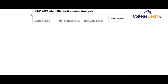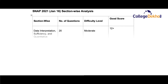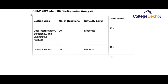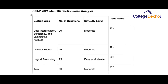The Data Interpretation and Quantitative Aptitude section had a total of 20 questions and the difficulty level was moderate. General English had a total of 15 questions, which were the least out of all sections, and the difficulty level was again moderate. Logical Reasoning had an easy to moderate difficulty level and there were a total of 25 questions in this section.